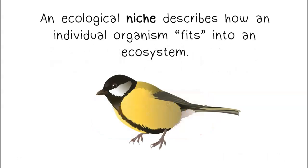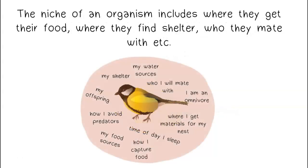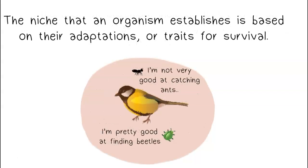An ecological niche describes how an individual organism fits into an ecosystem. The niche of an organism includes where they get their food, where they find shelter, and who they mate with. The niche that an organism establishes is based on their adaptations, or traits for survival.